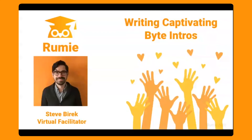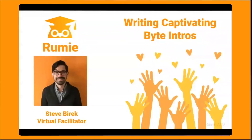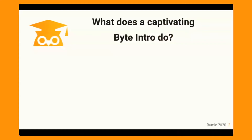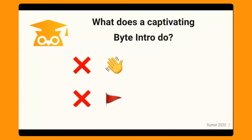Let's take a look at what a captivating bite intro does, and taking a step back, let's consider what a captivating bite intro doesn't do. First of all, despite the name, it doesn't actually introduce the bite. Learners have already come across an introduction through a link on their social media, or maybe a friend shared it with them, or they saw a cool bite headline on the Roomie site and thought, I want to learn this. So they've already been introduced to the bite. It also doesn't really introduce the learning objective, because the learning objective is kind of right there in the bite title.